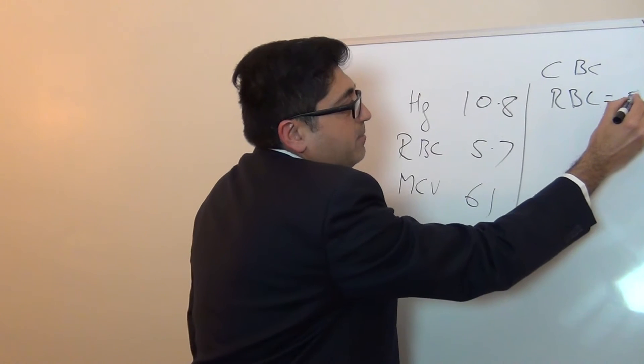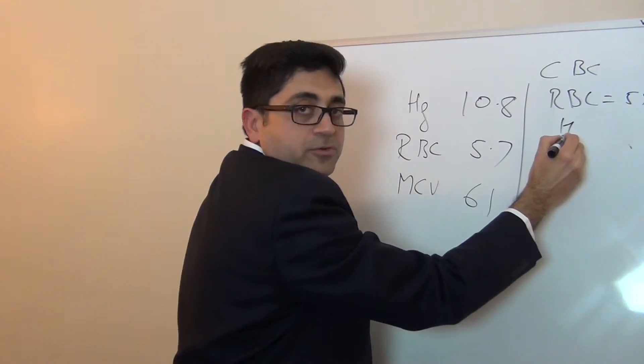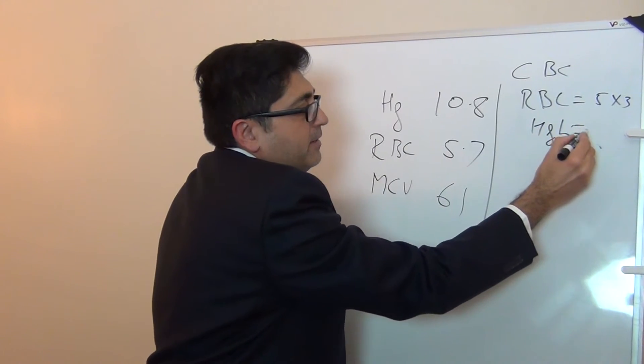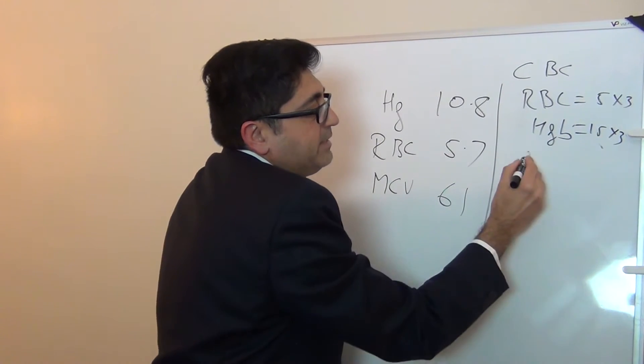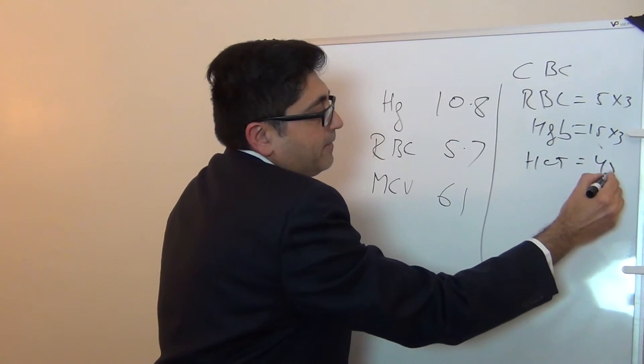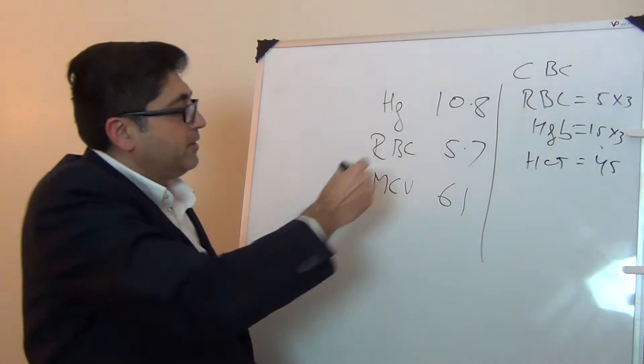If you multiply by three it will give you hemoglobin, multiply by three gives you hematocrit. So here our rule...